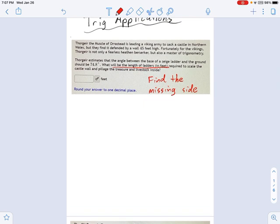Back to number one. I've got a wall that's 45 feet high. So I've got a right triangle. This is my castle wall, 45 feet high. So here's your ladder. I want to know how long that ladder is. And the angle that it forms with the ground, according to this problem, is 74.8 degrees.